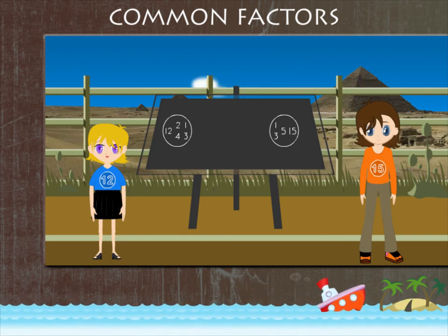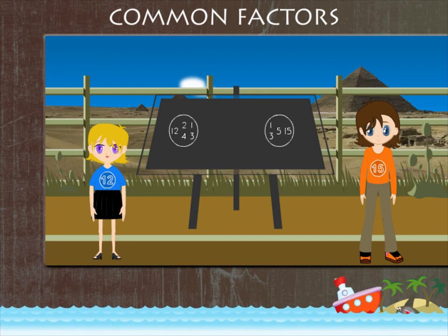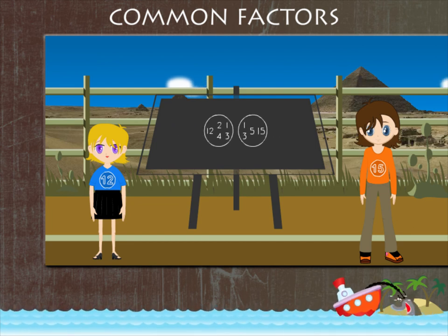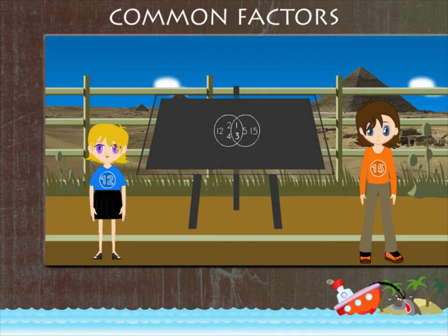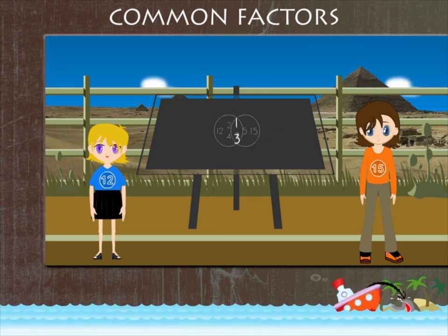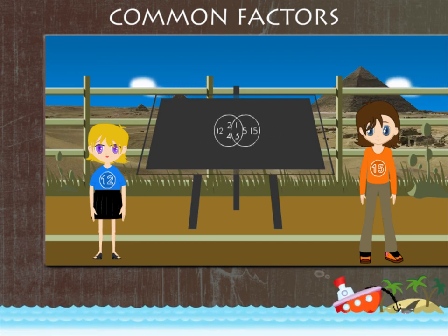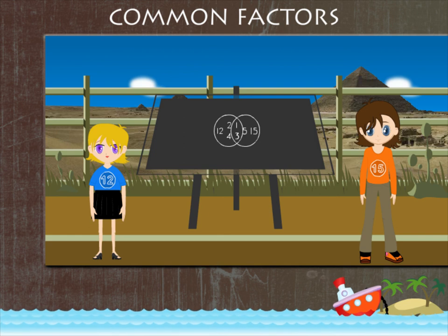If you intersect the factors of Mini and Max, you can see that 1 and 3 are common factors for 12 and 15. That's simple.